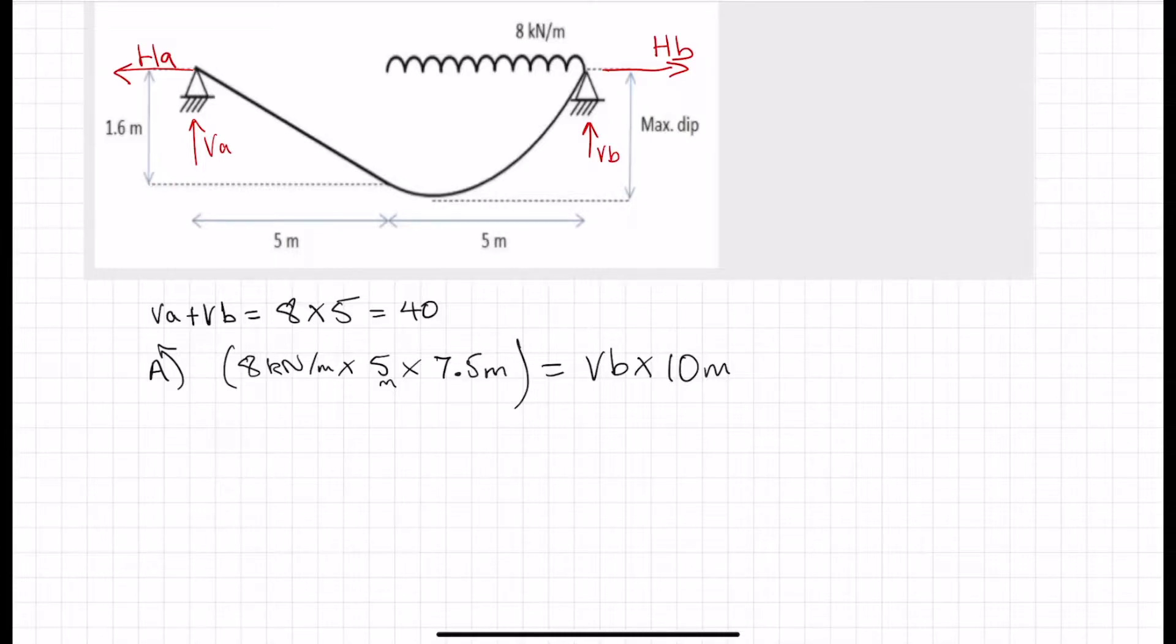So let's solve that. We've got 10 VB, and on the left-hand side, we've got 8 times 5, which is 40 times 7.5. 300 is equal to 10 VB. So VB is equal to 30, and therefore VA is equal to 10 kilonewtons. VB is equal to 30 kilonewtons, and VA is equal to 10 kilonewtons.